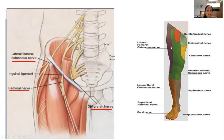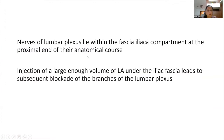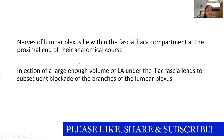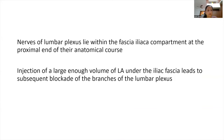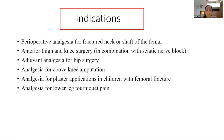When giving the fascia iliaca compartment block, the local anesthetic spreads toward these three main lumbar plexus nerves, providing analgesia to most of the anterior, medial, and lateral aspect of the thigh. A large enough volume of local anesthetic must be injected under the fascia iliaca. Since these are volume blocks, good volume is essential — concentration can be reduced, but volume must be adequate for sufficient spread.